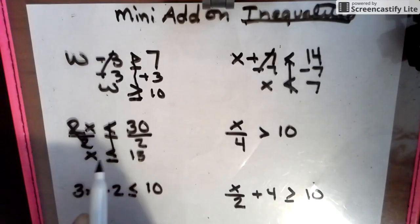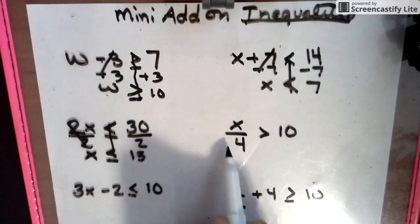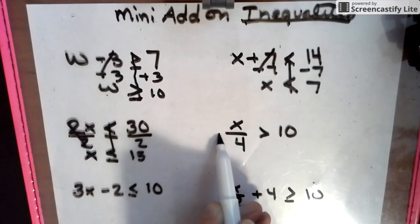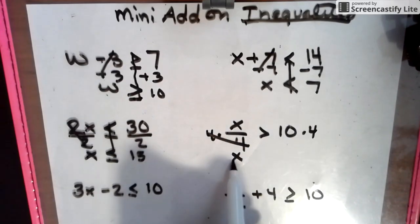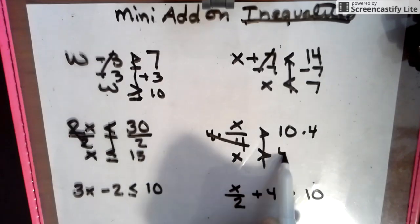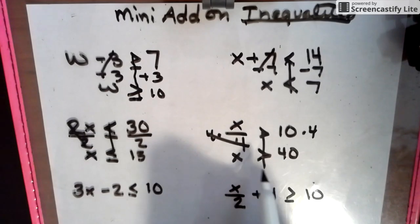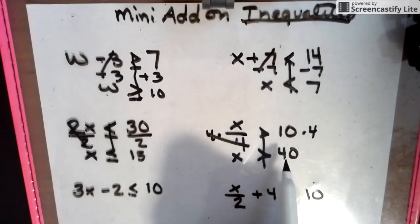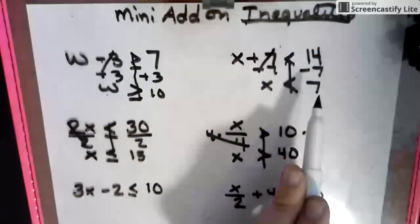Remember, numbers that are less than or equal to 15. So instead of dividing by 4, we're going to times by 4, times by 4. X is greater than 40. So all numbers greater than 40 work for an inequality — it's not just one number. It's all numbers greater than 40. All numbers less than 7.